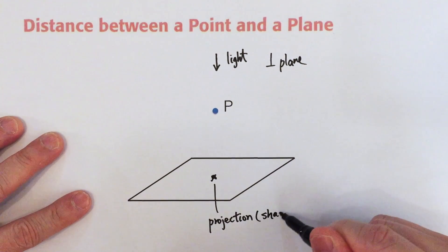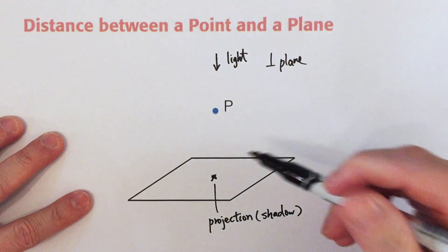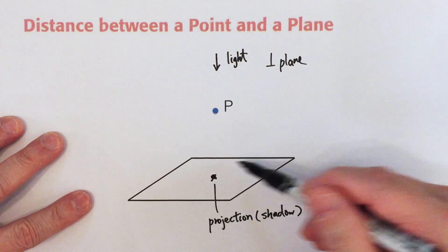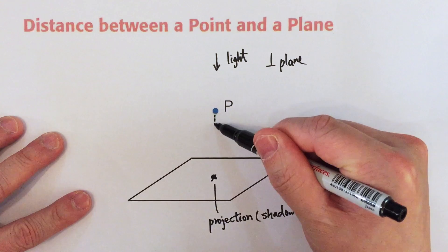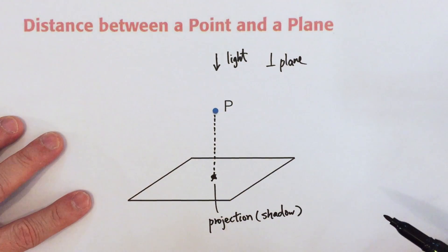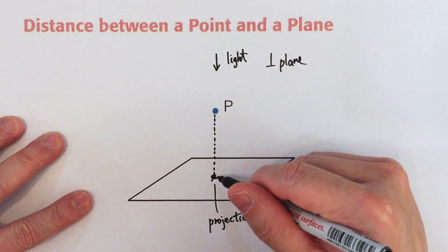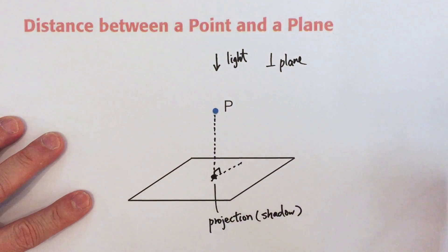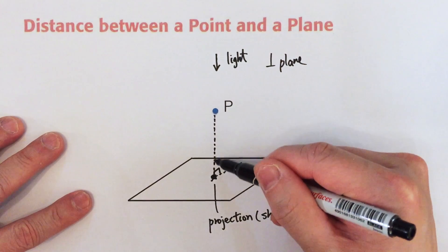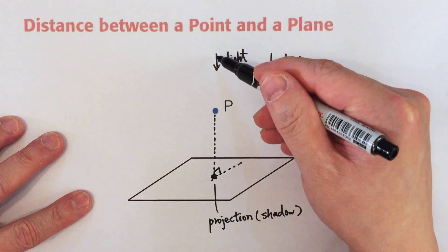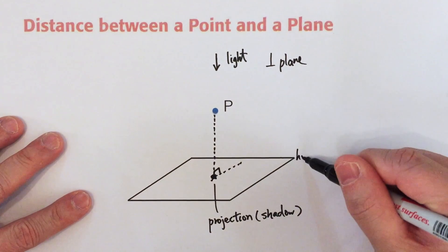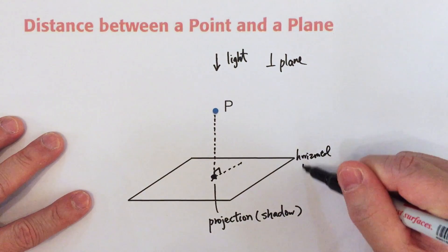Actually the meaning is just like a shadow - the projection of point P on the plane. So this will be a vertical distance. And in fact, if you draw any line on the plane, this will always be a right angle because this is a vertical line. The light is shining directly from the top to the bottom and this is a horizontal plane.